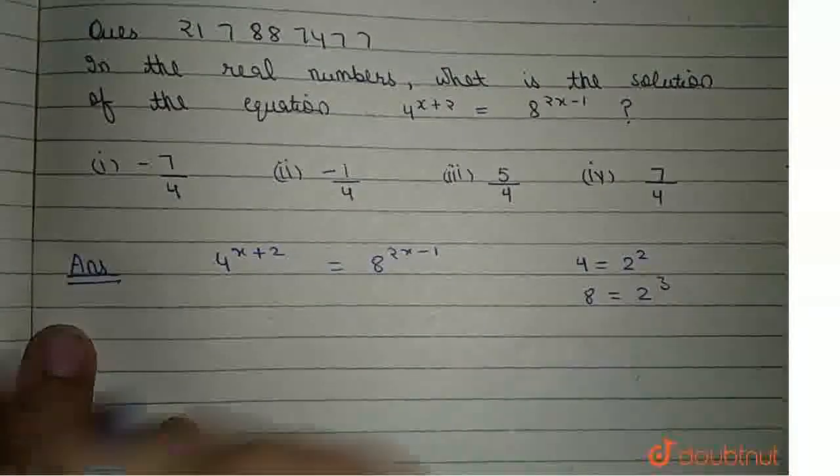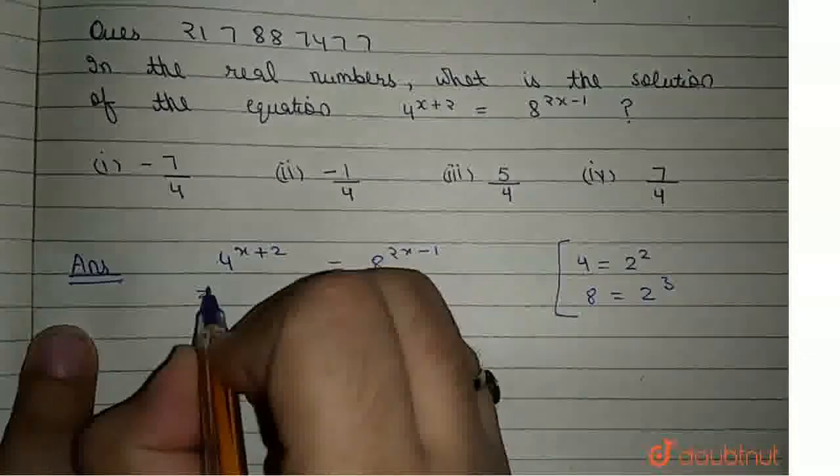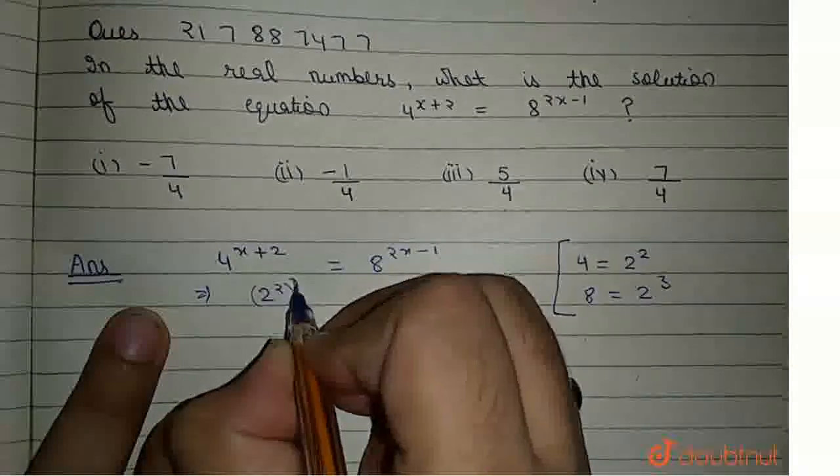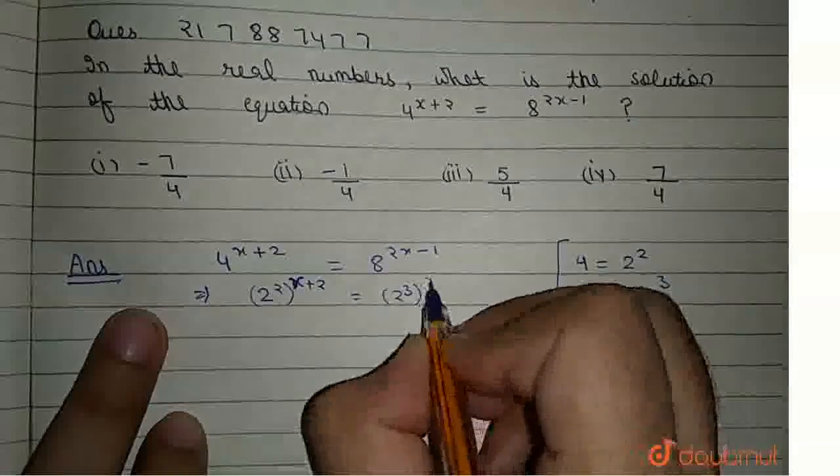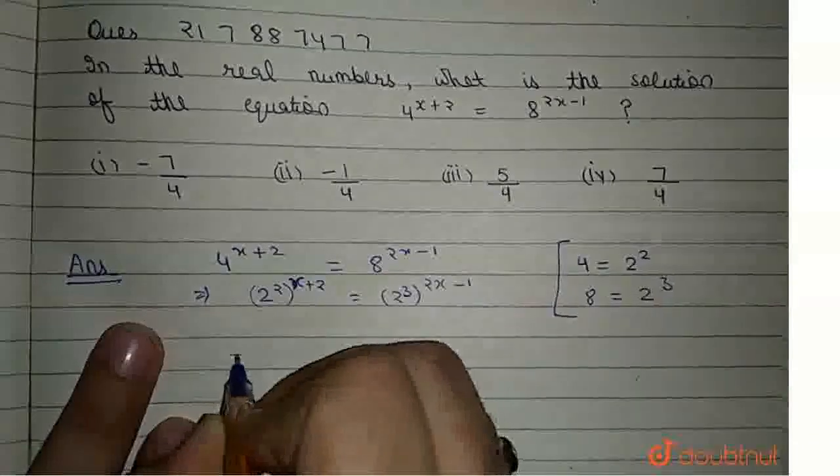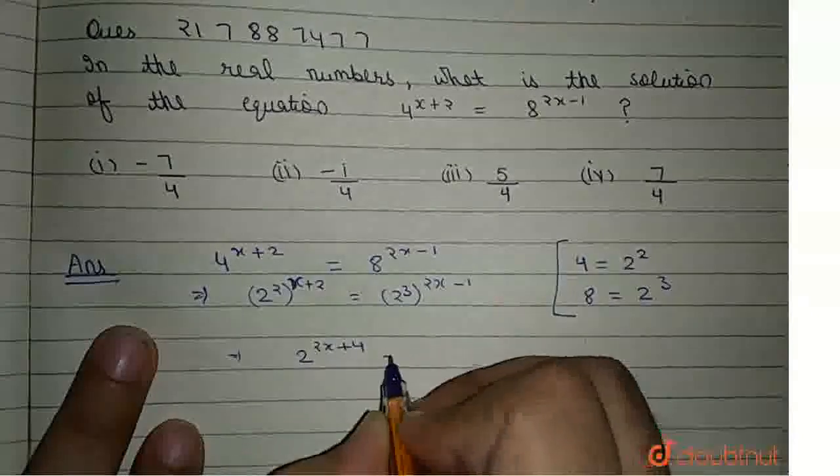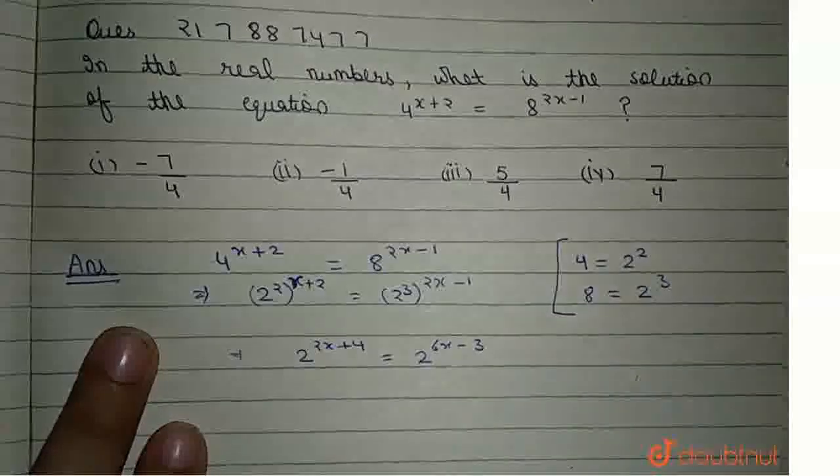If we substitute these values in the equation, we get (2²)^(x+2) = (2³)^(2x-1), which can be written as 2^(2x+4) = 2^(6x-3), by multiplying 2 with x+2 and 3 with 2x-1. We get this.